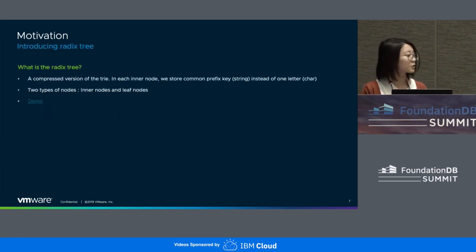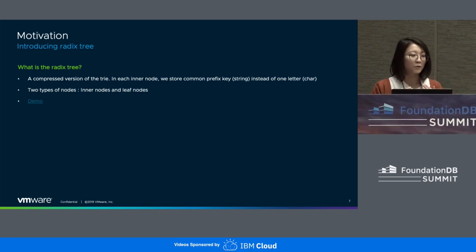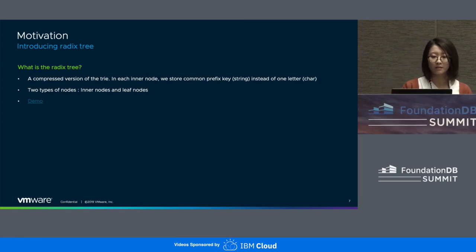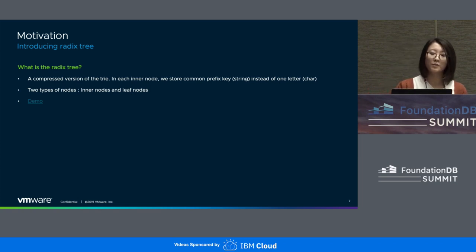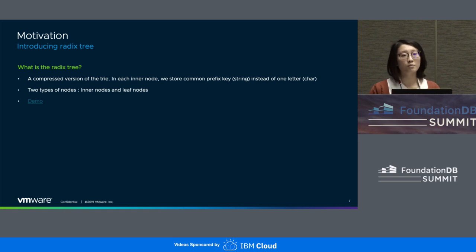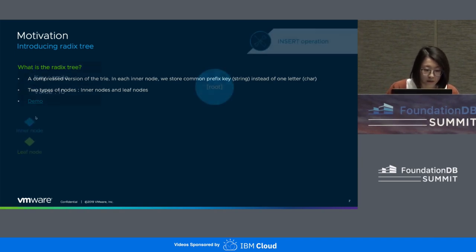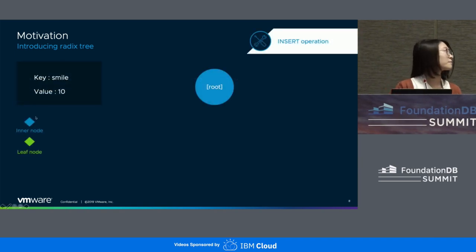So what is a Radix Tree? If you're familiar with a trie or dictionary tree, a Radix Tree is a compressed and space-optimized version of it. The difference is that in a Radix Tree, we store the common prefix key — usually as a string — instead of one character per node. There are two types of nodes inside a Radix Tree: inner nodes map partial keys to next-level nodes, and leaf nodes store the value corresponding to the key. I have a quick demo to show how a Radix Tree works at a very high level.